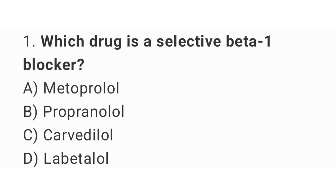Question number 1. Which drug is a selective beta-1 blocker? The right answer is option A. Metoprolol.